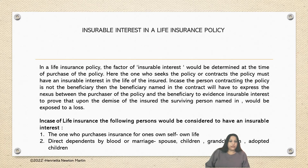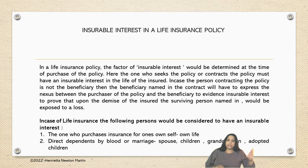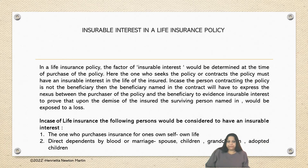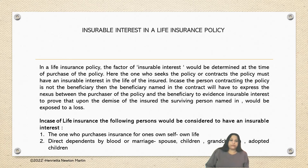First, the one who purchases the policy — that is, the person insuring his own life or own self. Second is direct dependence by blood or marriage: spouse, children, grandchildren, and adopted children. There could also be insurable interest for parents in case the person has no progeny and no spouse. A life insurance policy could also be sought in the name of aged parents, but the consent of the aged parents has to be sought and they have to willingly sign the insurance contract.